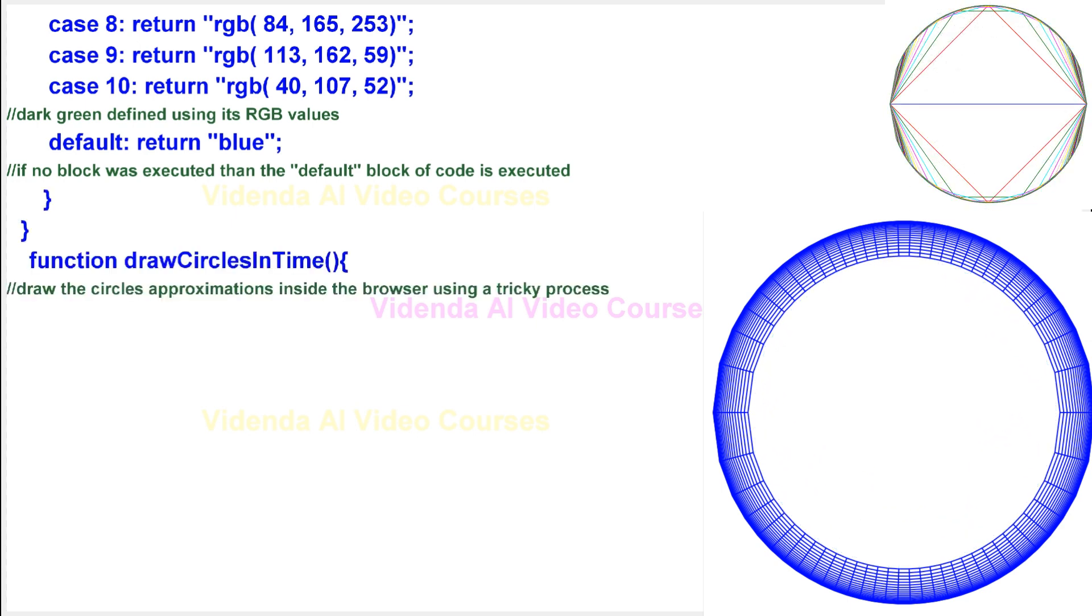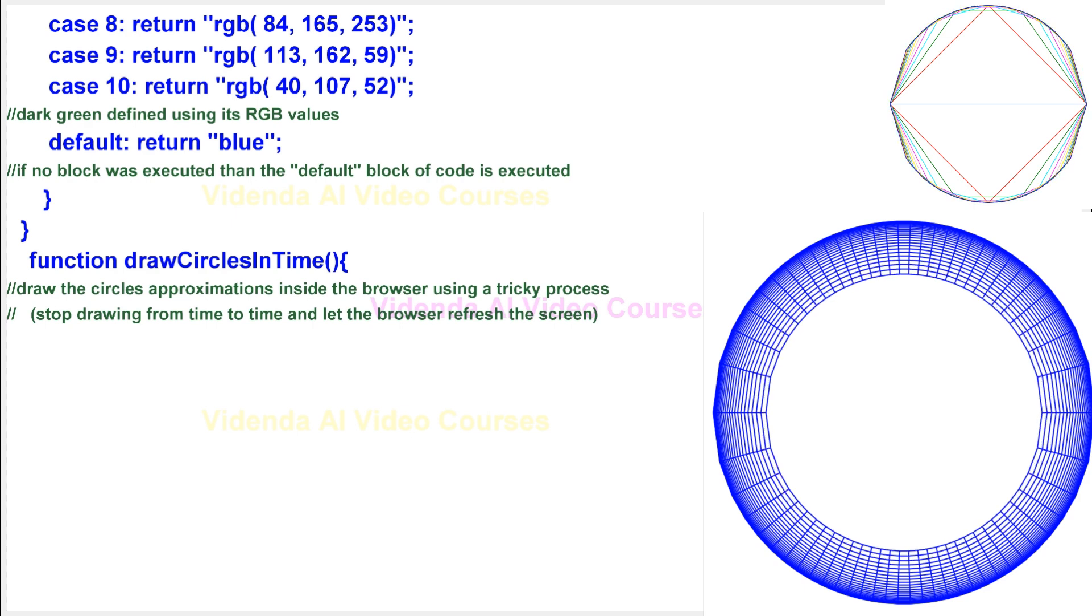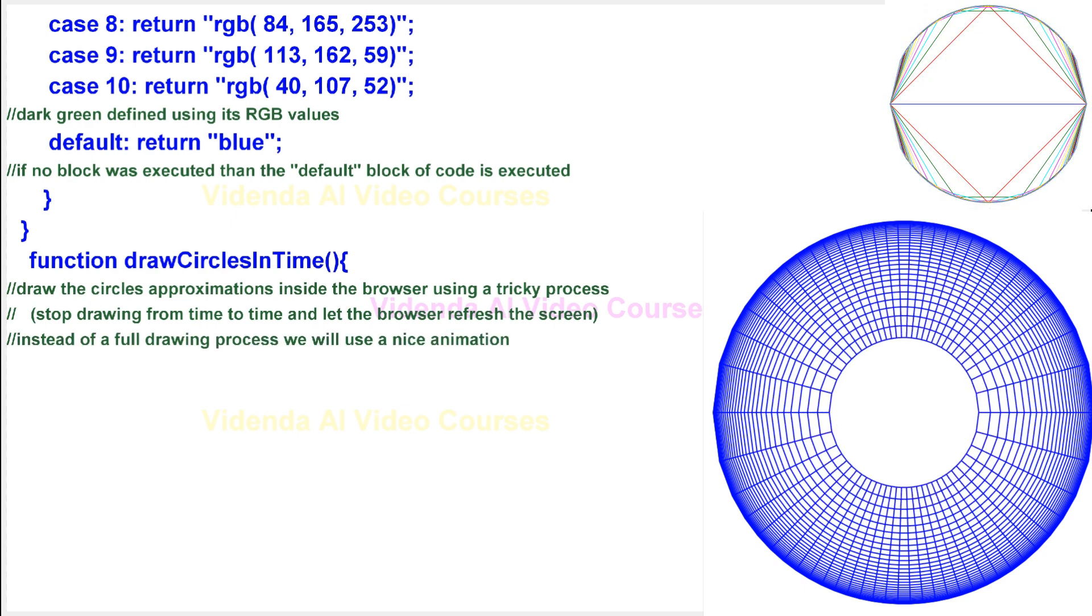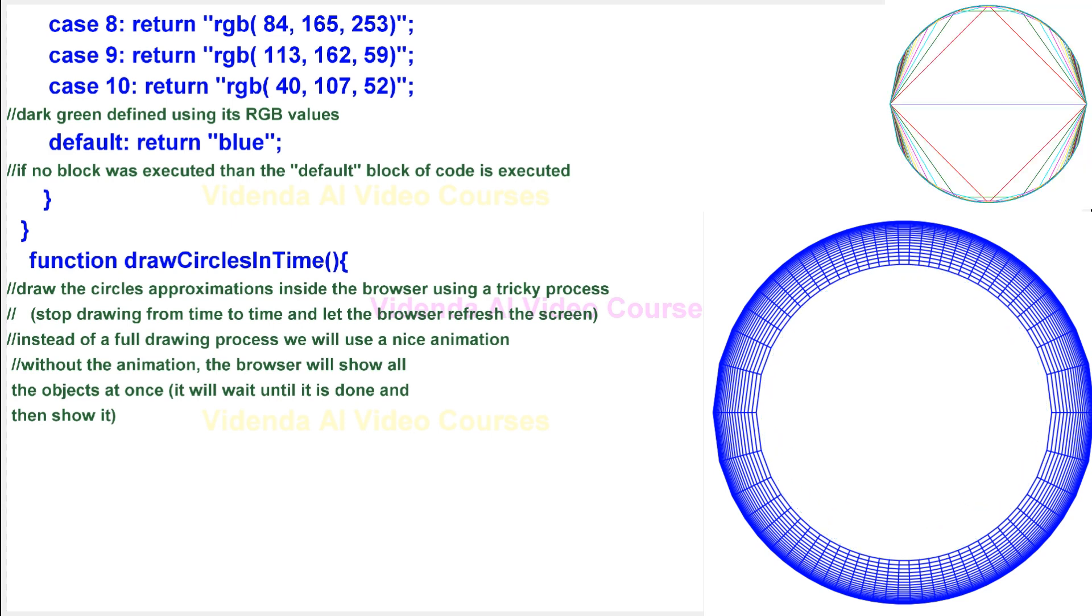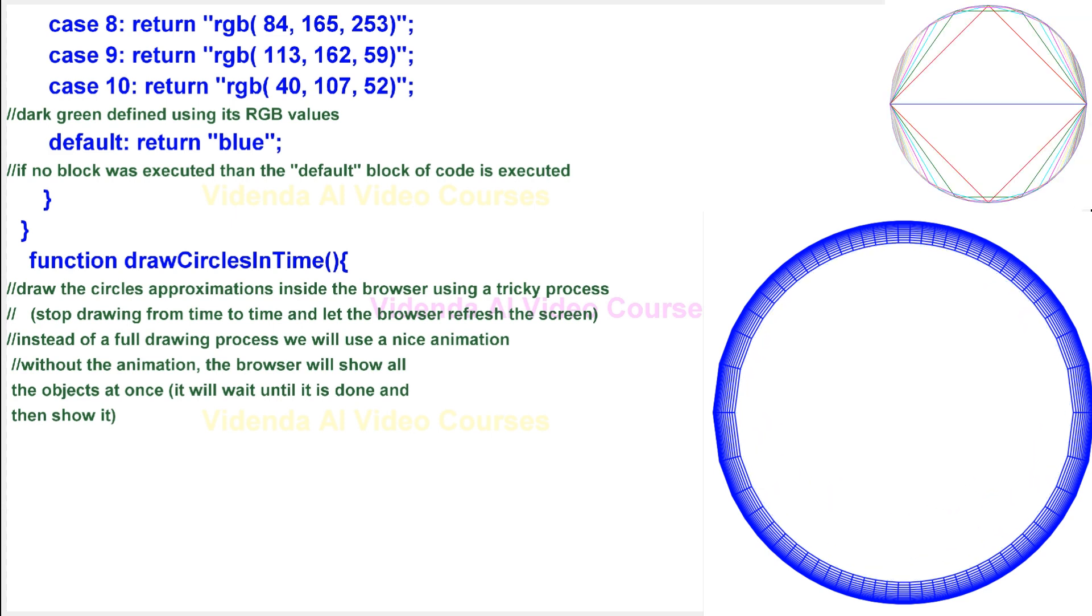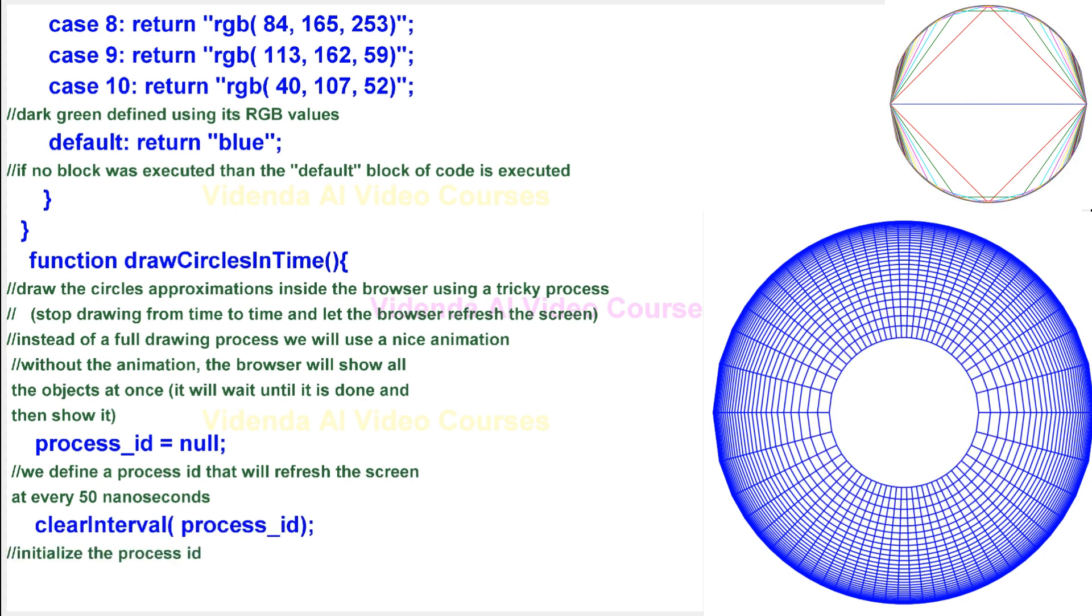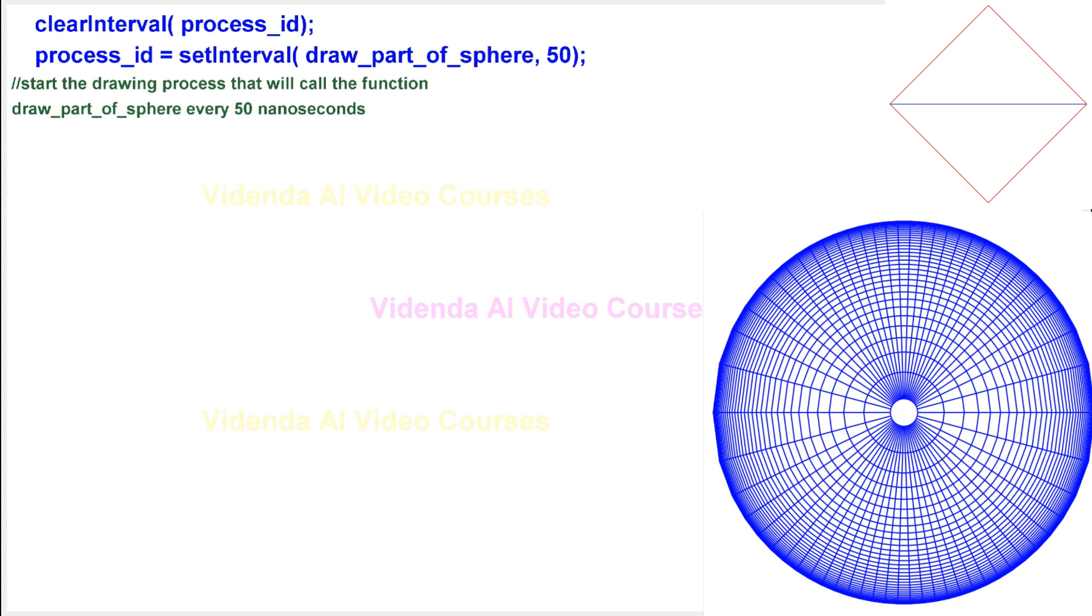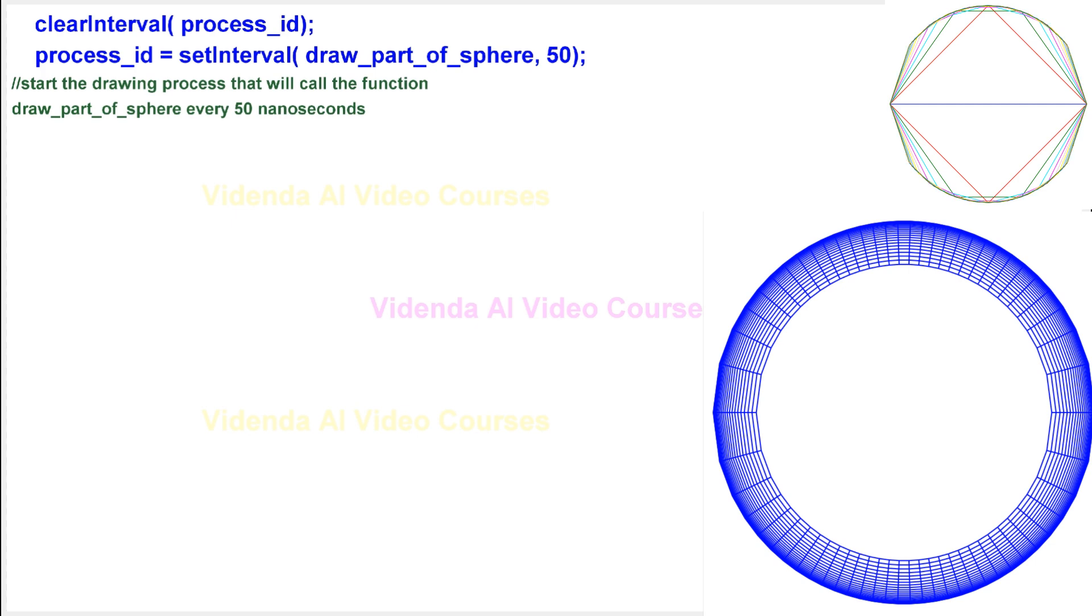Draw the circle's approximations inside the browser using a tricky process. Stop drawing from time to time and let the browser refresh the screen. Instead of a full drawing process we will use a nice animation. Without the animation, the browser will show all the objects at once, it will wait until it is done and then show it. We define a process id that will refresh the screen at every 50 nanoseconds. Initialize the process id. Start the drawing process that will call the function draw underscore part underscore of underscore sphere every 50 nanoseconds.